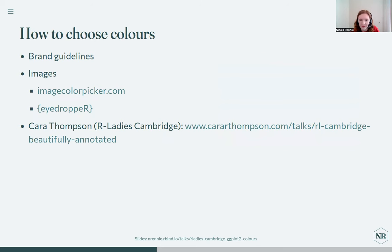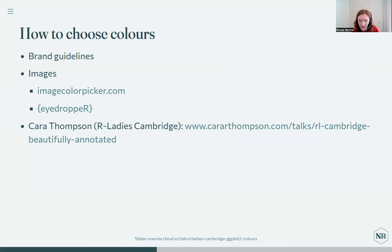There are color picker tools for choosing hex codes from images — online tools like the Image Color Picker, and also an R package called the eyedropper package that lets you do that directly from within RStudio. Cara did a talk last month that covers choosing colors based on your dataset and what your data is trying to show, so have a look at her slides for more on thematically choosing colors.